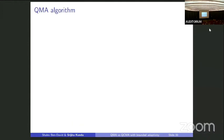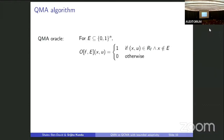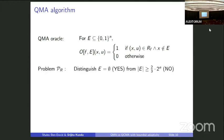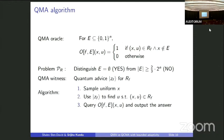More formally, our oracle is labeled by a hidden function f and a subset E of {0,1}^n. O(f, E) at position (x, u) equals 1 if (x, u) is in R_f and x is not in the erased set E, and 0 otherwise. The problem is to distinguish between E being the empty set (no locations erased) or E being a large set (most locations erased). The QMA advice state for this problem is just the quantum advice state Z_f for the relation R_f, and the algorithm is simple: sample a uniform x, use the advice state Z_f to find u such that (x, u) is in R_f, and query it.